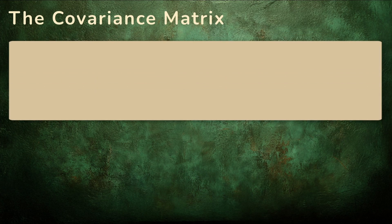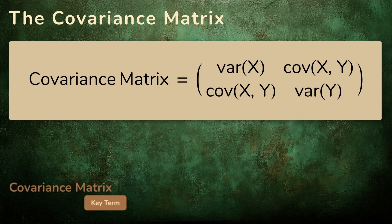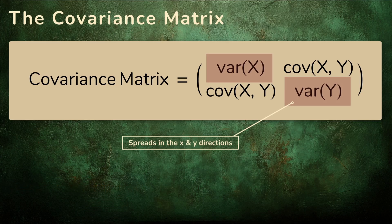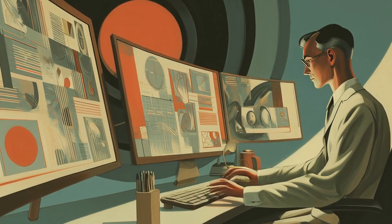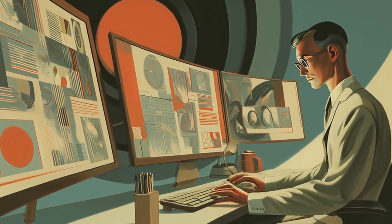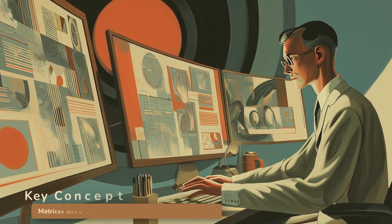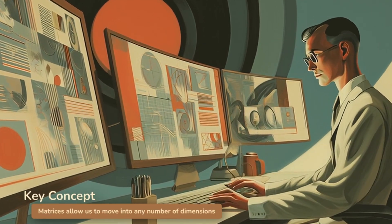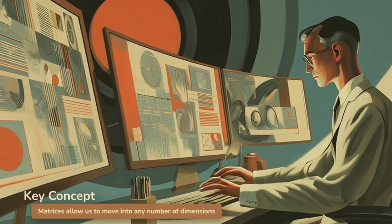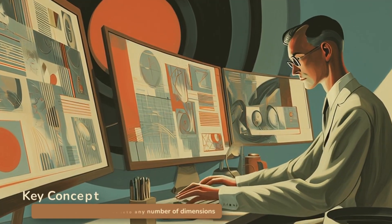Mathematicians organize these numbers into a grid called the covariance matrix. On the diagonal are the variances, the spreads in the x and y directions. Off the diagonal sits the covariance, appearing in both positions. Why use a matrix? Because once you move beyond one dimension, vectors and matrices are the natural language for describing data. They make it possible to extend these same ideas to three, ten, or even hundreds of dimensions, all using the same framework.